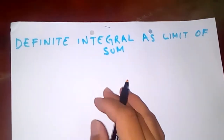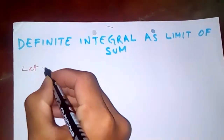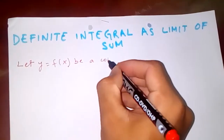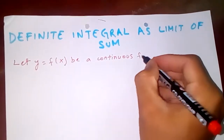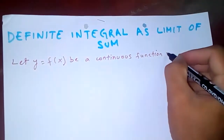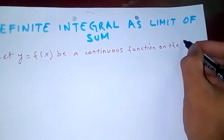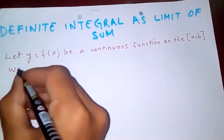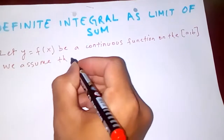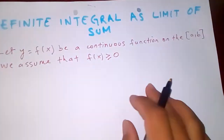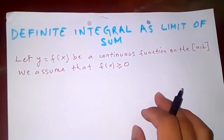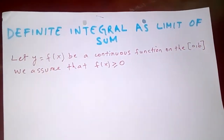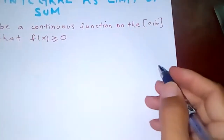First of all, let y = f(x) be a continuous function on the closed interval [a, b]. Now we assume that f(x) is greater than or equal to zero. Why do we assume this? Because when we draw the graph, the function lies above the x-axis.